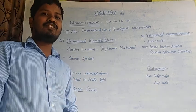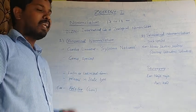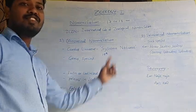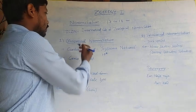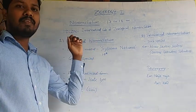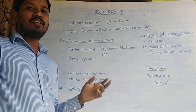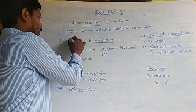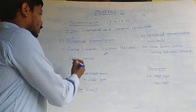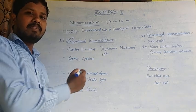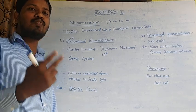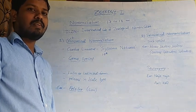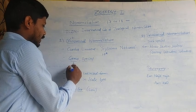Carolus Linnaeus, a Swedish botanist, popularized binomial nomenclature by using it in the 10th edition of his book Systema Naturae. In this type of nomenclature, the scientific name consists of two components — two words — hence it is called binomial nomenclature. The first word refers to genus and the second refers to species.